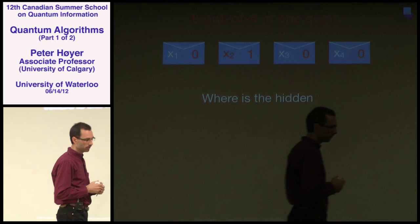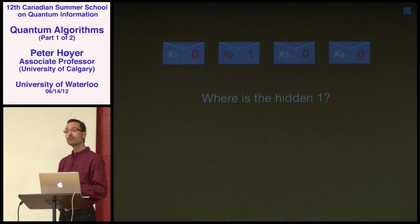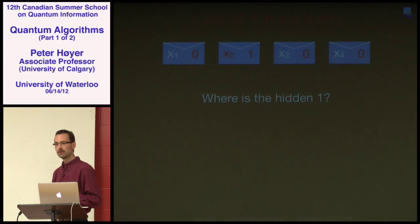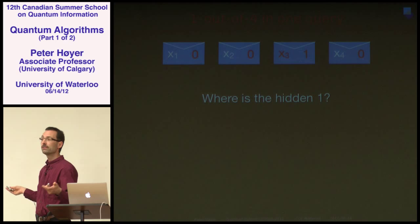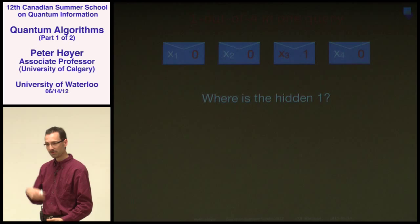Let's start designing algorithms. Here's the first problem: we have four envelopes and exactly one contains a one — that's a promise. Where is it? Is it in the second envelope, the third, or one of the others? Classically, how many queries does this take?